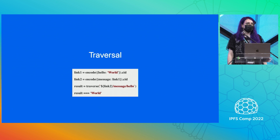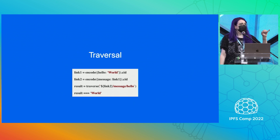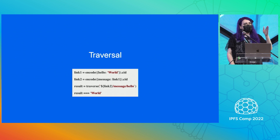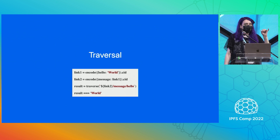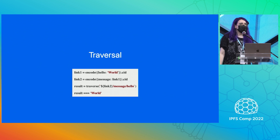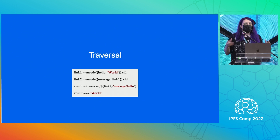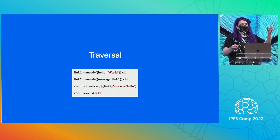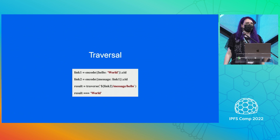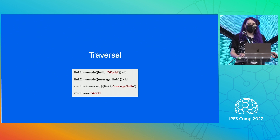Speaking of traversal, that's also something that IPLD can do for you. Given the tree that we saw earlier, we can take the link of that root, then add a path to it where given the root node, we want to path into the message property, and then from there path into the hello property and get back 'world'. The kind of naive approach to traversing data is to just write code that will get the individual links and follow them, but that can be super messy to write. Instead, we have this nice syntax that saves a lot of the trouble of traversing and makes it easier to deal with deeply nested data.